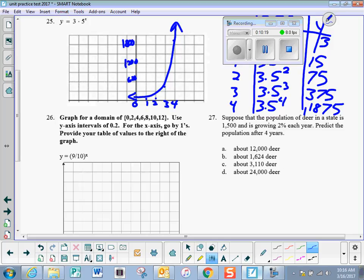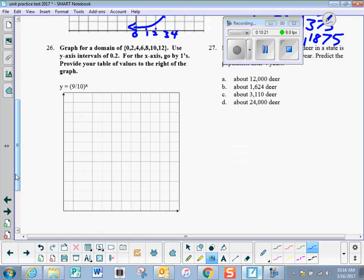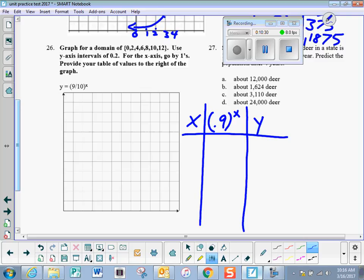And 26, 9 tenths. So again, if I make a table, X, 9 tenths. Someone said, can I use a decimal? Well, because it's terminating, you sure could, and it makes it a lot easier. So we have 0, 2, 4, 6, 8, 10, 12.